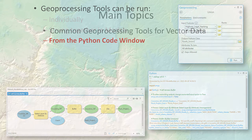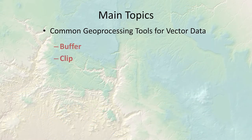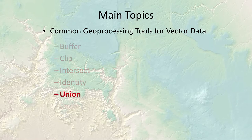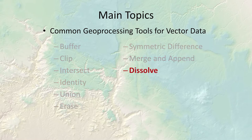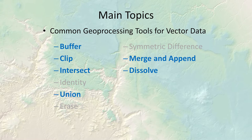In our lab exercises we're going to use the buffer, clip, union, merge, dissolve, and intersect tools. These are some of the oldest geoprocessing functions produced by Esri, going back to Arc Info in the 1980s.